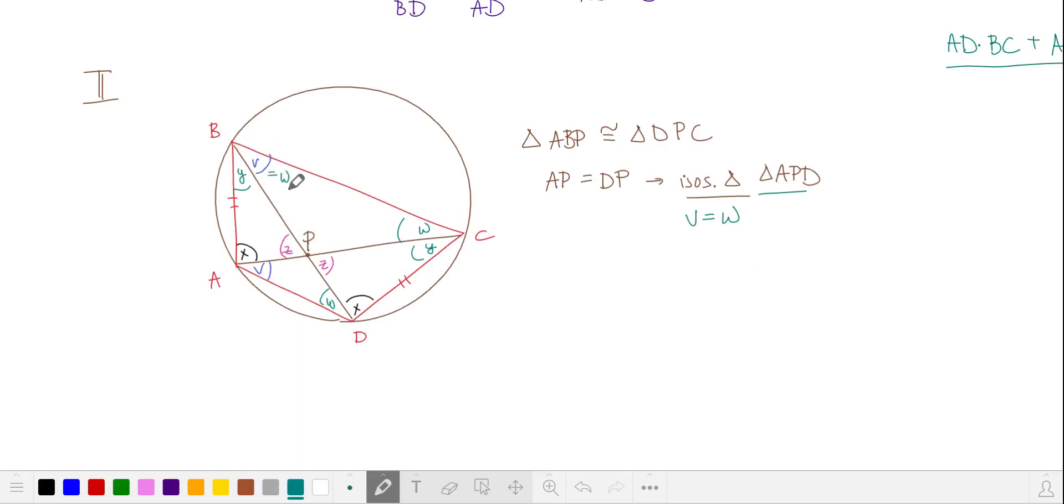With this isosceles triangle, the base angles are V and W and they are equal to each other. This angle up here is equal to W. So we have alternate interior angles that are congruent. AD is parallel to BC. So anytime you have a cyclic quadrilateral with two congruent sides, you're going to have an isosceles trapezoid.